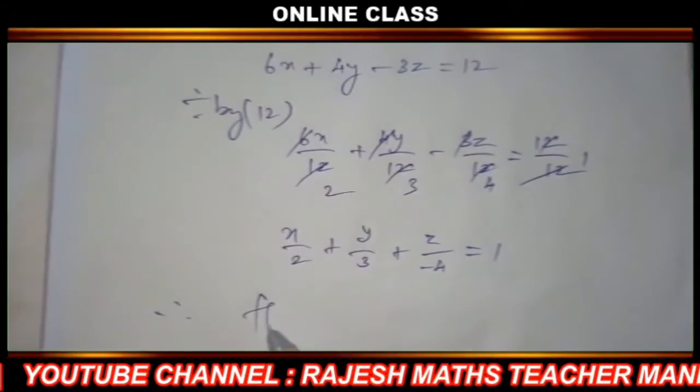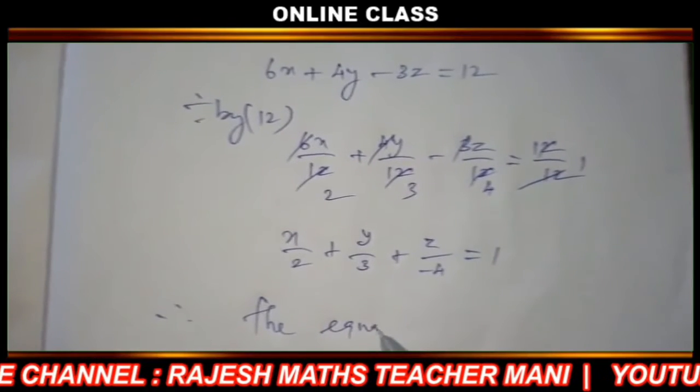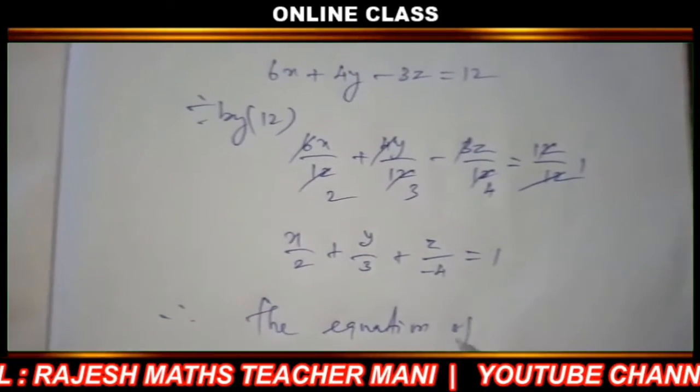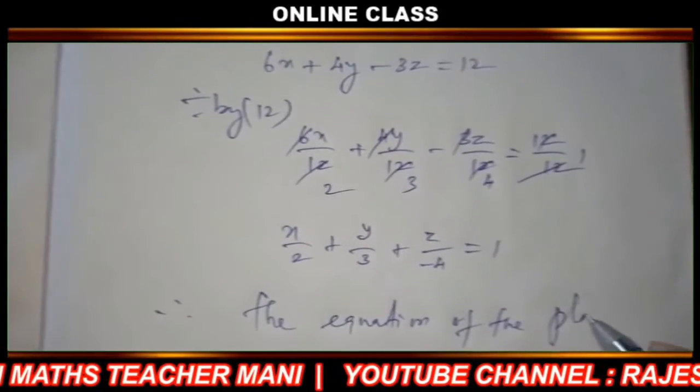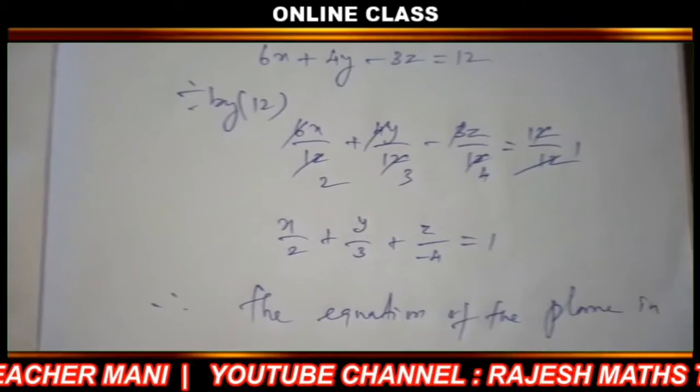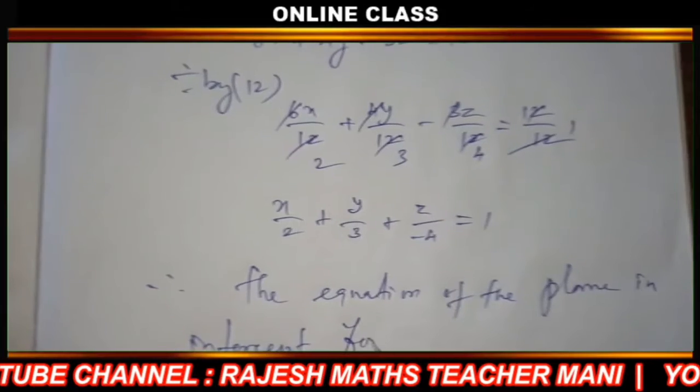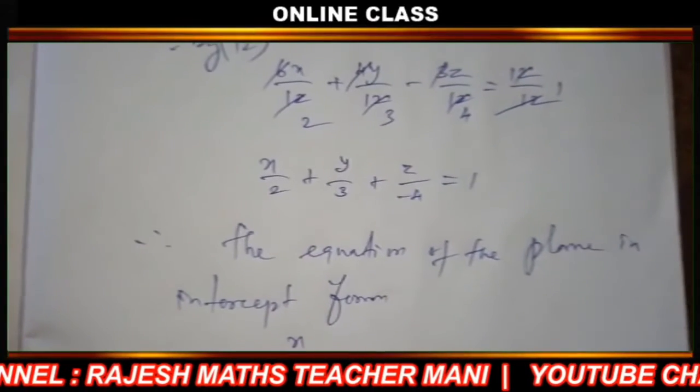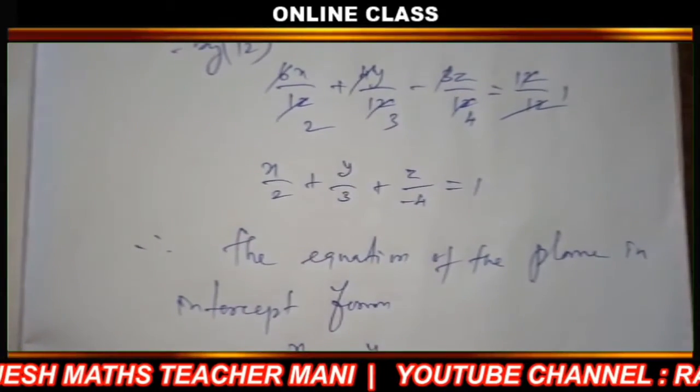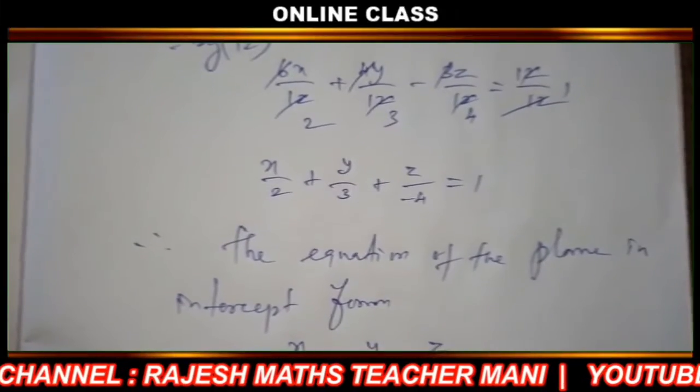The equation of the plane in intercept form: x by a plus y by b plus z by c equal to 1.